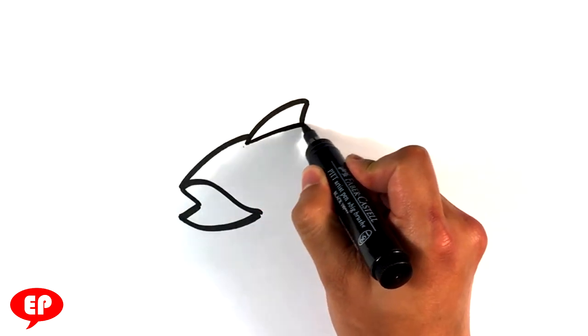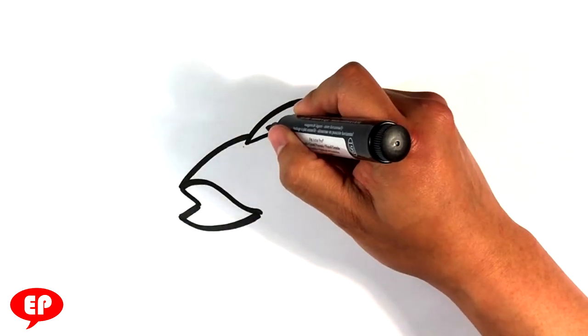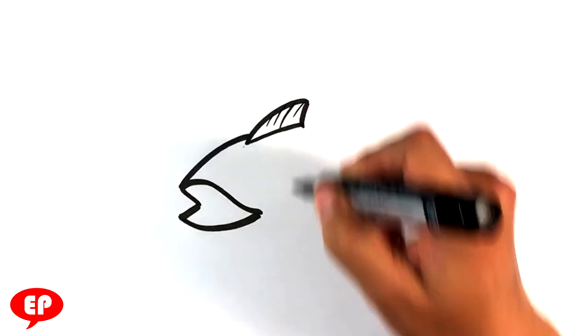Close that line off, close that fin off, and throw fin lines across the fin so it won't look like a shark fin.